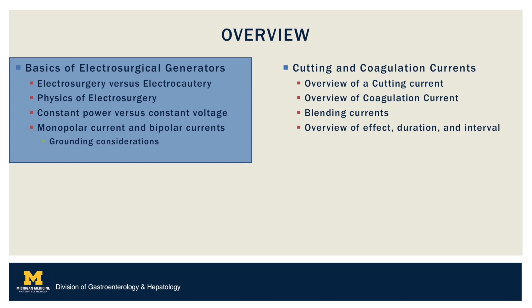For this week's tip we'll review the physics of electrosurgery, the difference between constant power and constant voltage, and discuss mono and bipolar currents. This week's tip is part one of a two-part series. We will discuss the physics of electrosurgery, differences in generators based on voltage and power, and current.